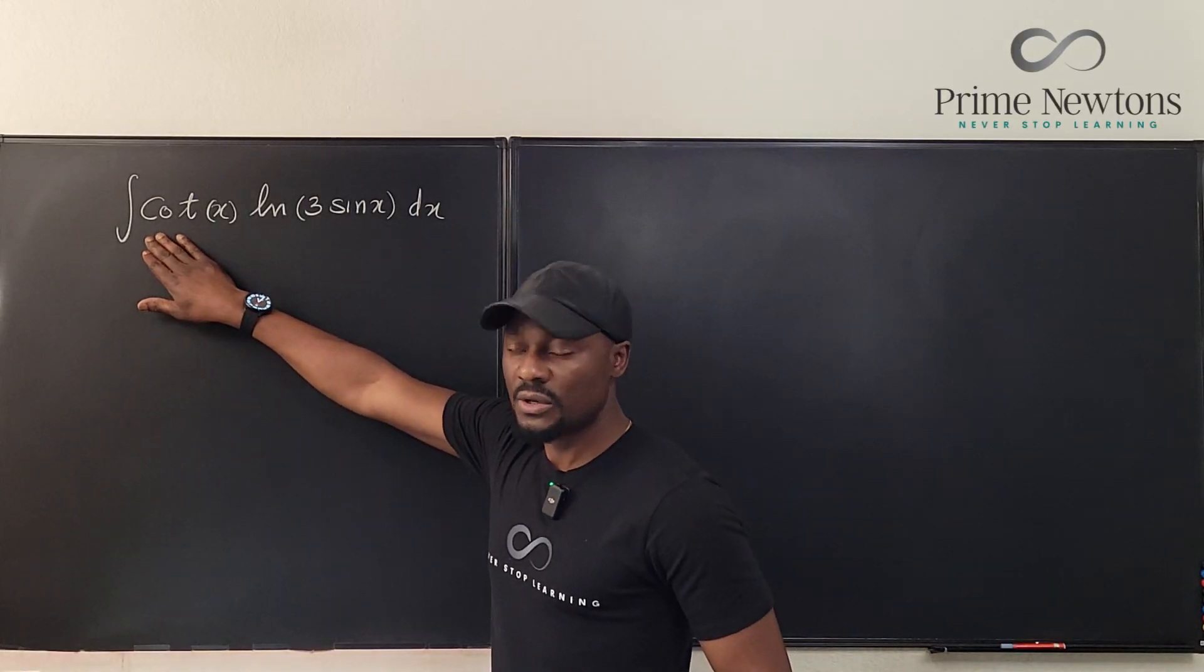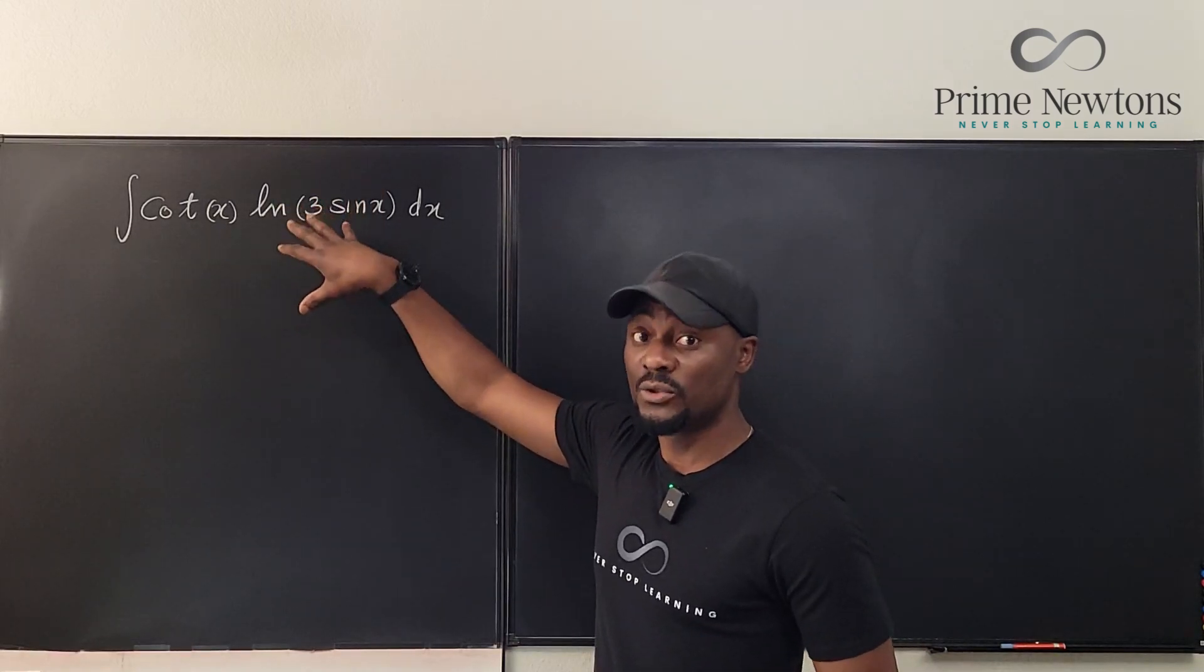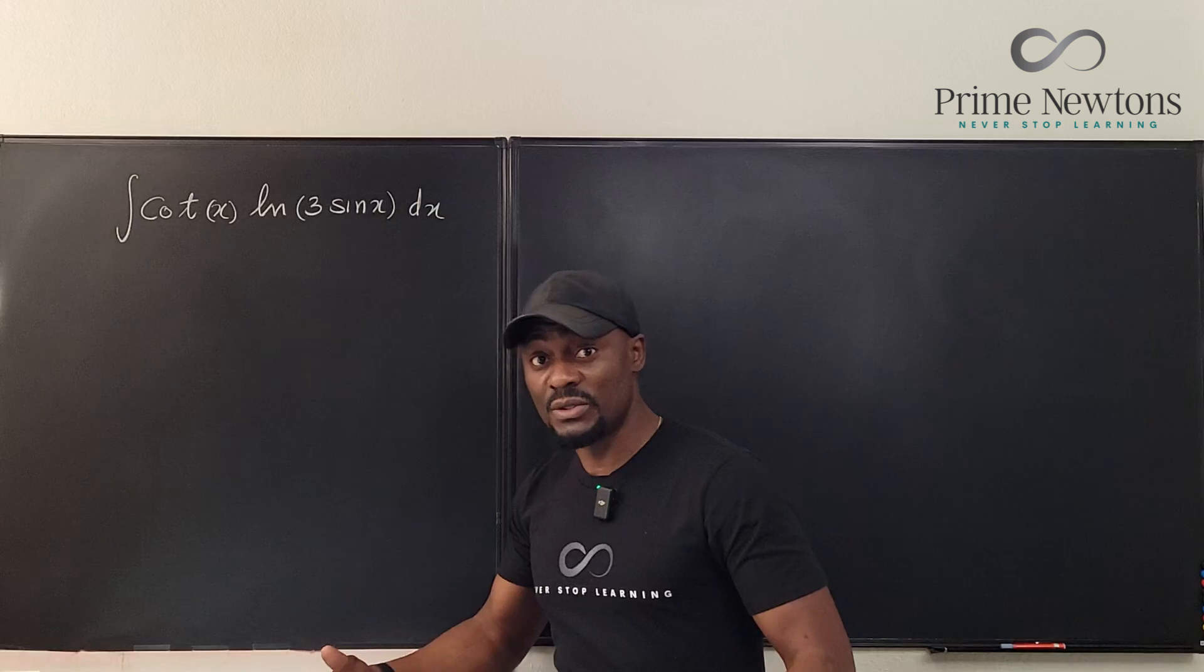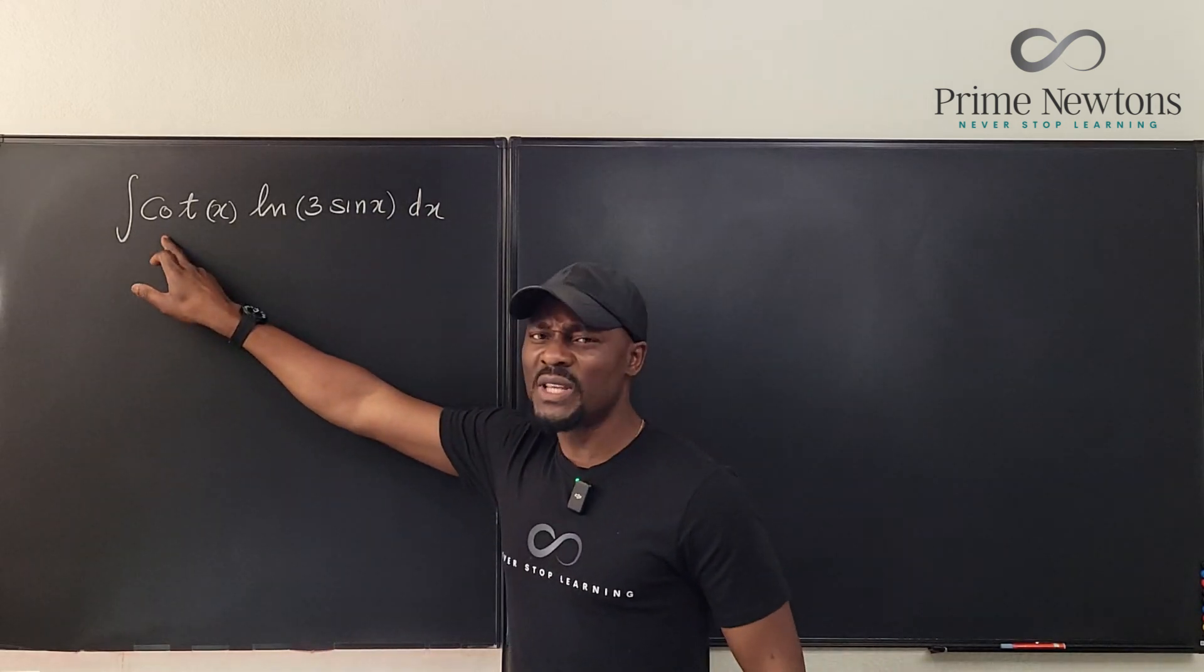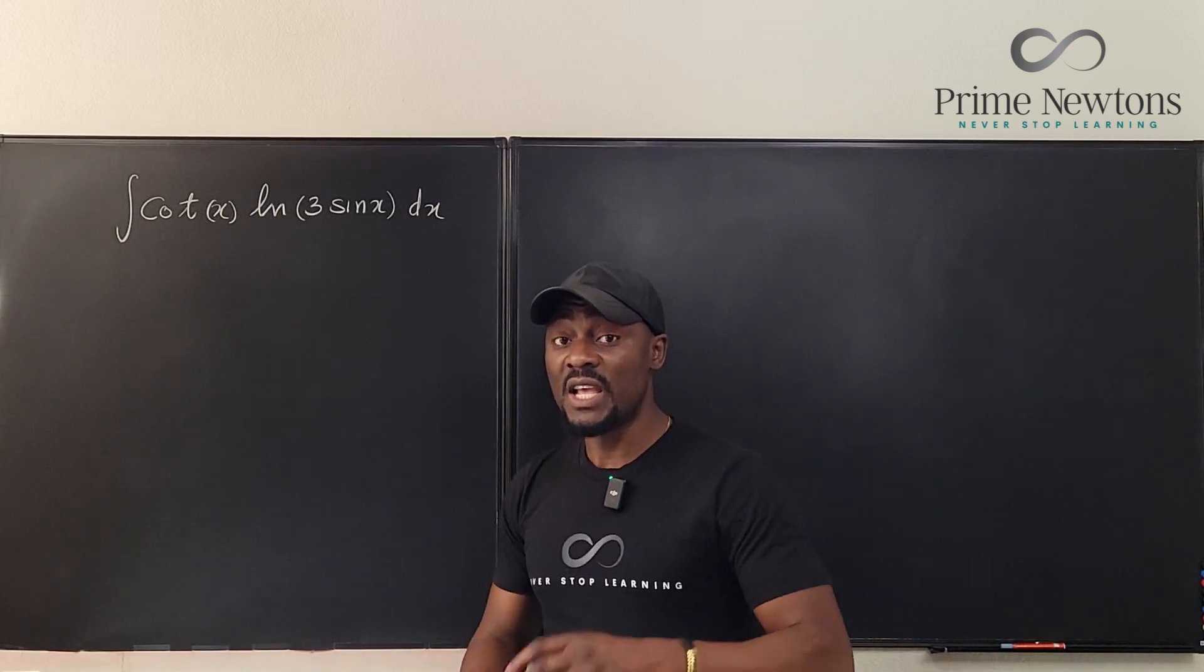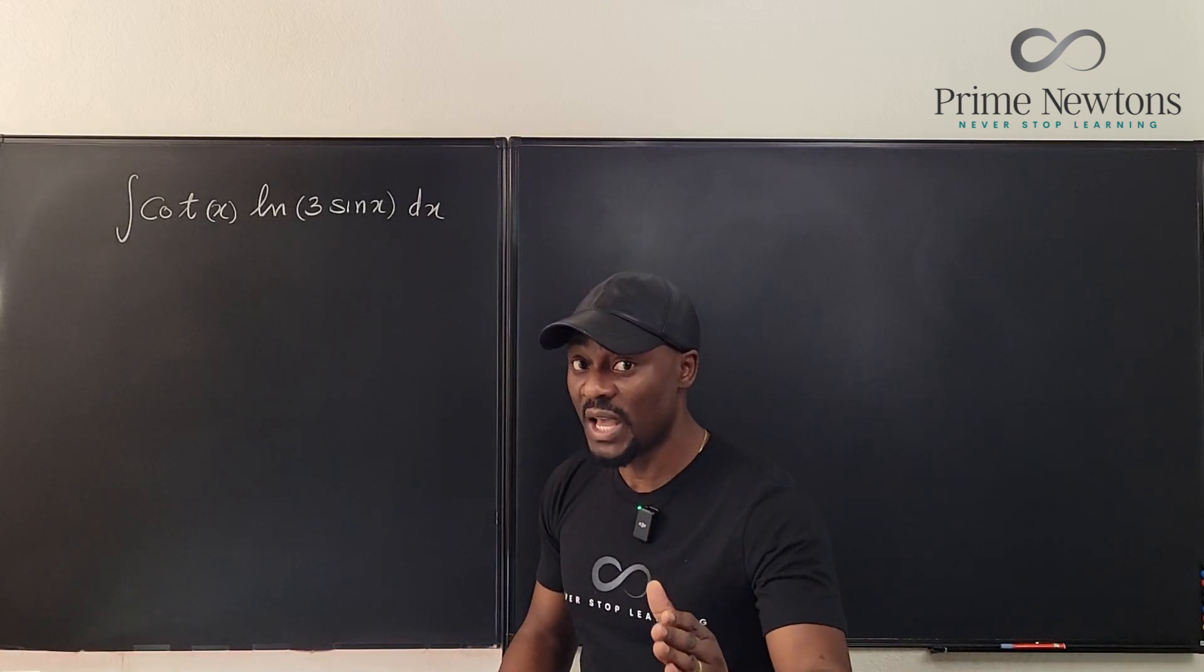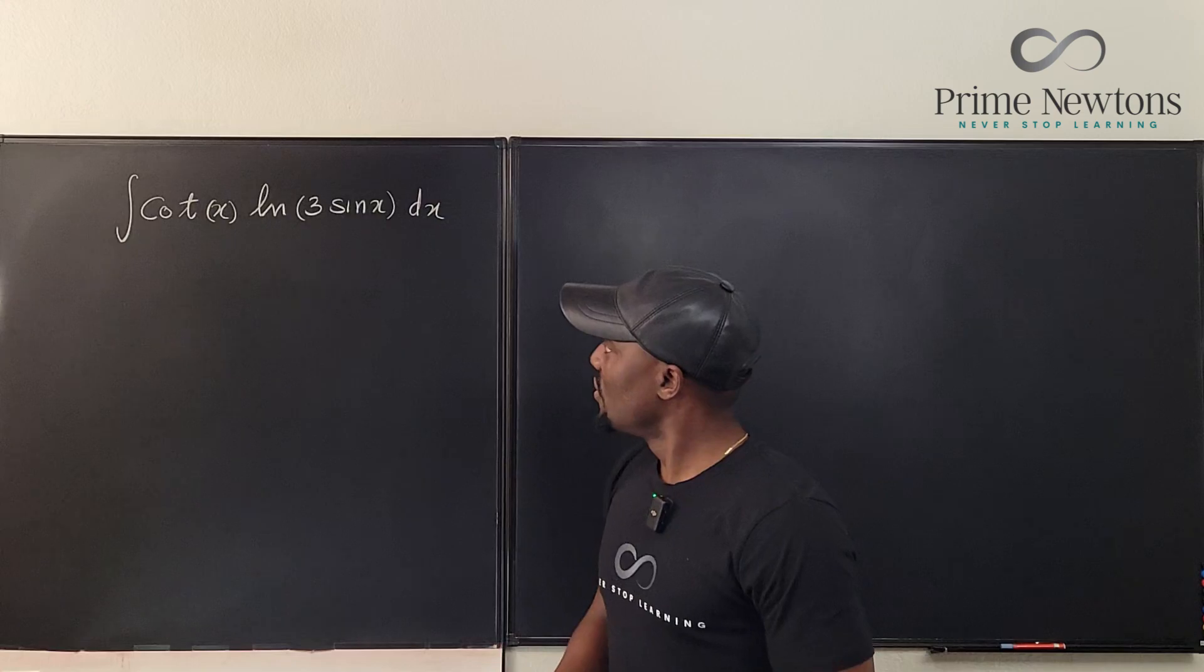I have a trig function multiplying a natural log function whose argument is another trig function. At this point, if you're new to u-substitution, you may not know what exactly you want to do. Cotangent x does not look easy, so you're told to rewrite all trig functions in terms of sine and cosine.